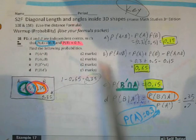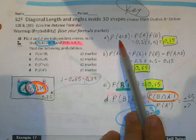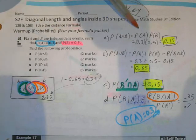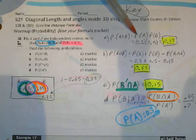So first off, to find the intersection of events that are independent, you multiply the probabilities together, so the intersection of the two is going to be 0.15.